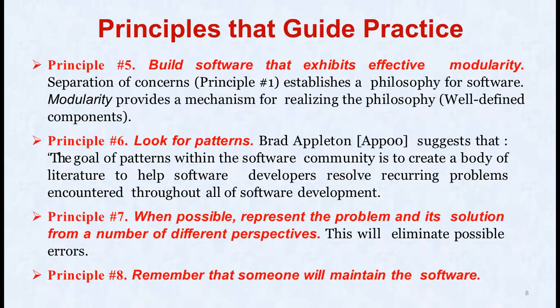The sixth principle is to look for patterns — the goal of patterns within the software community is to create a body of literature to help software developers resolve recurring problems throughout all software development. When possible, represent problems and solutions from different perspectives to eliminate all possible errors. The eighth principle is to remember that someone will maintain the software — software will be corrected as defects are uncovered, adapted as its environment changes, and enhanced as capabilities grow. Maintenance activities can be facilitated by solid software engineering practice applied throughout the software process.